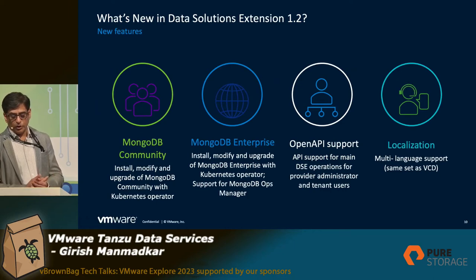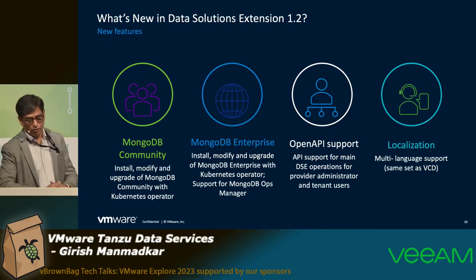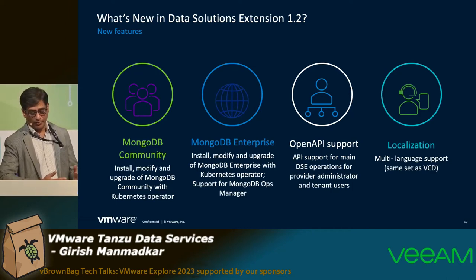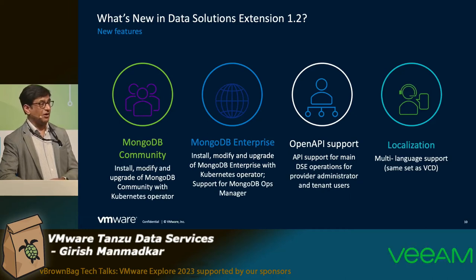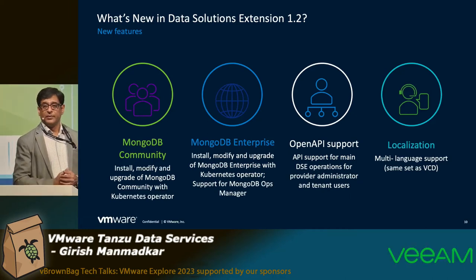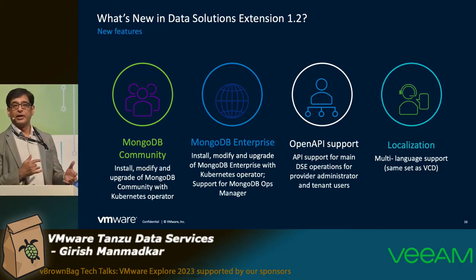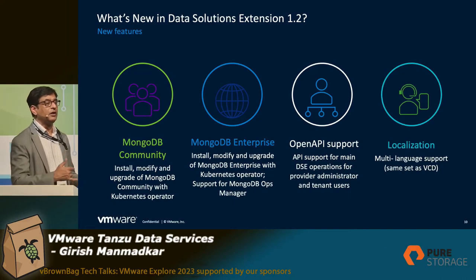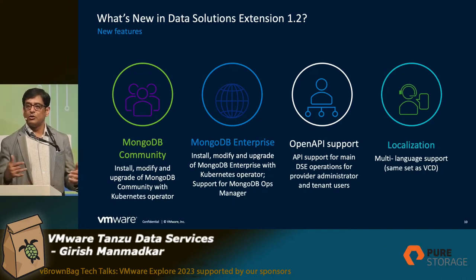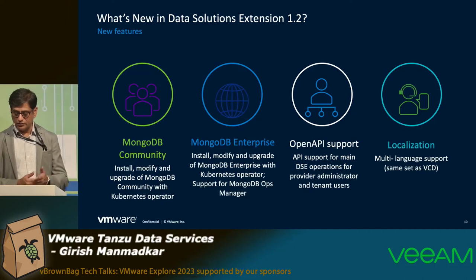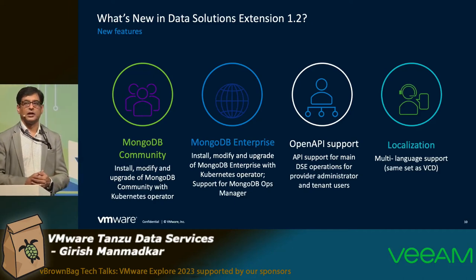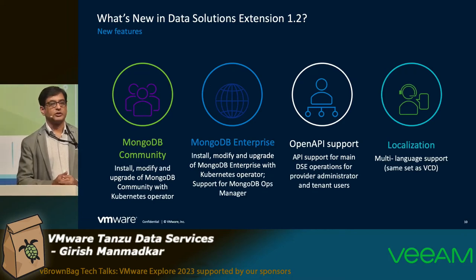What is new in the 1.2 release: MongoDB community edition has a more easy button for install, modify, or upgrade. For Enterprise, we support MongoDB Ops Manager to give you more visibility into your MongoDB environment. API support is always key — most providers start with UI but then switch to API for end-to-end operations and third-party integrations. And localization, same as what VMware Cloud Director currently supports, so multilingual language support is already there.